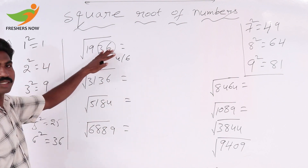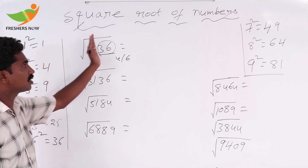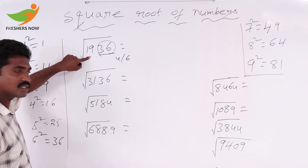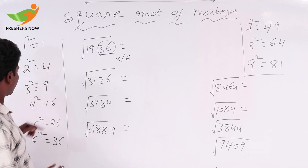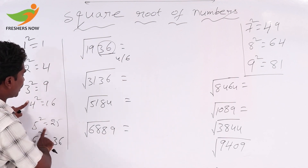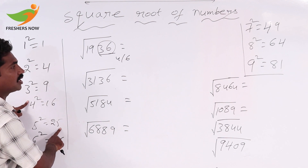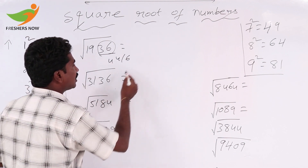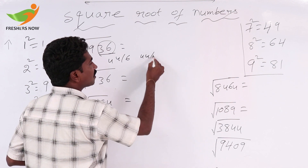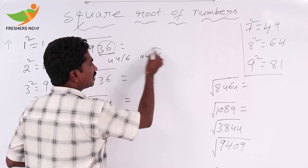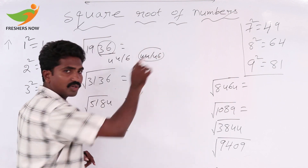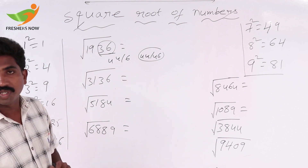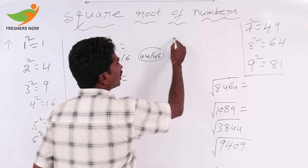Here, 36 is there. Total 4 digits — keep 2 digits away. 19 is there. Now, 4 squared is 16 and 5 squared is 25. So we can take 4. The answer is either 44 or 46. In between these two, 45 is there.